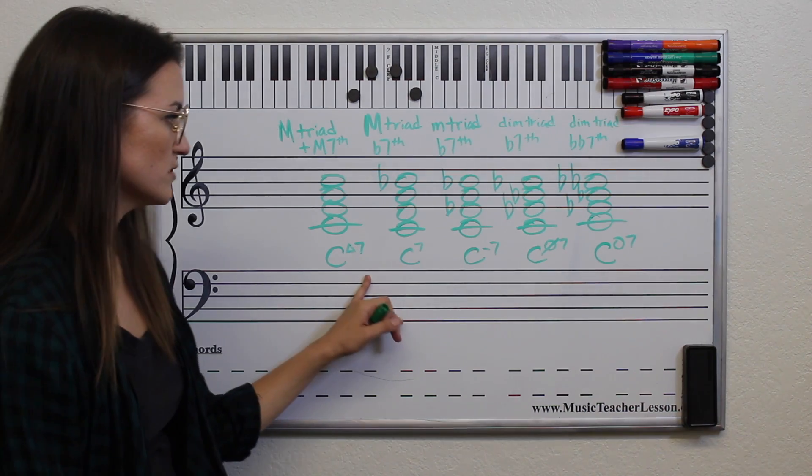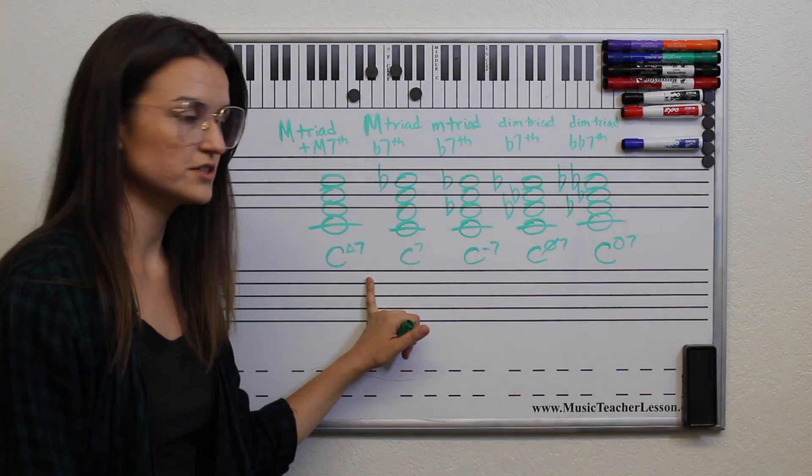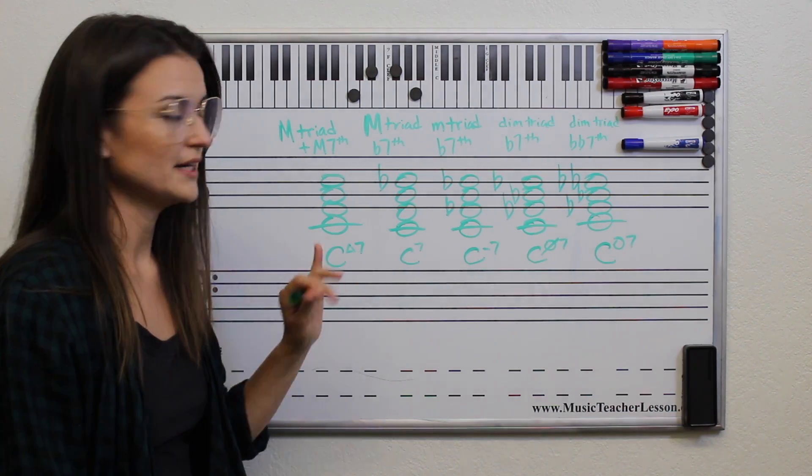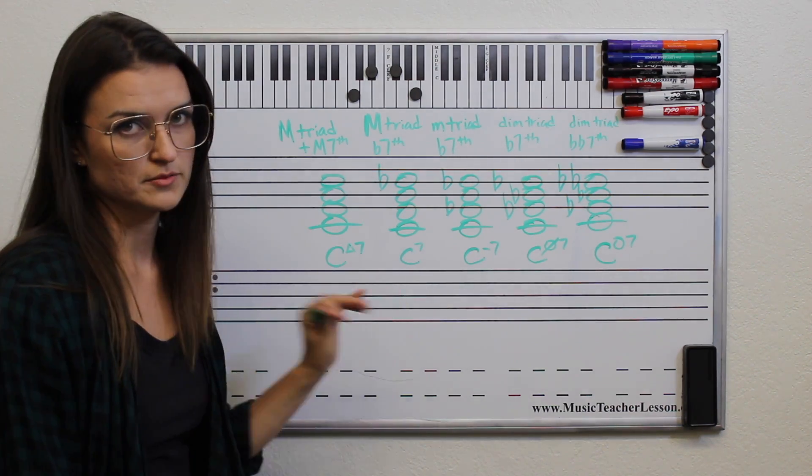Okay, so as long as you know your key signatures and your scales, you can pretty much figure out any 7th chord on the piano. So that was my explanation of 7th chords. I hope you learned something. 7th chords are amazing because the sound it creates when you play more than three note harmonies.